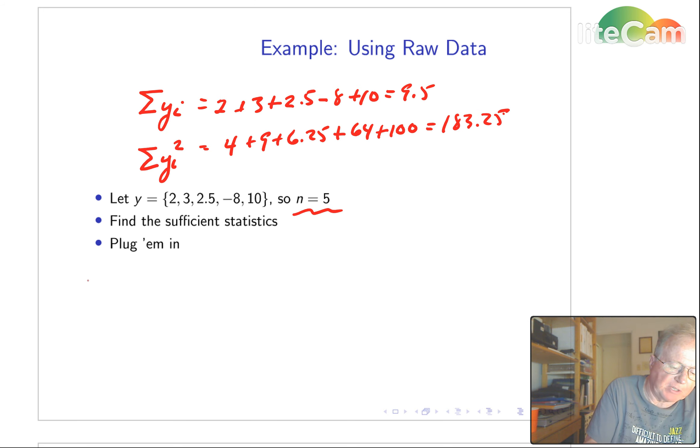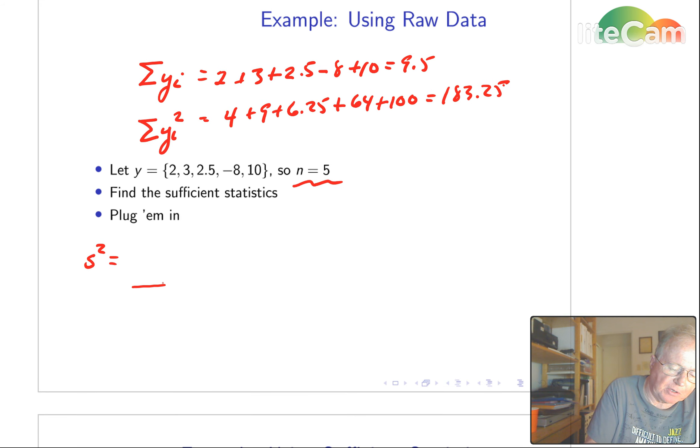So now we'll plug them in. Sample variance is 183.25 minus 9.5 squared over 5, divide all that by 5 minus 1, and a bit of calculator work gives us 41.3.